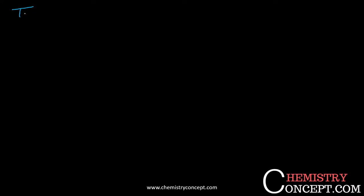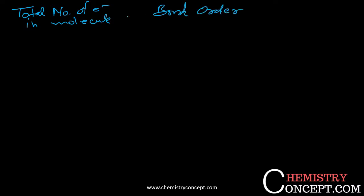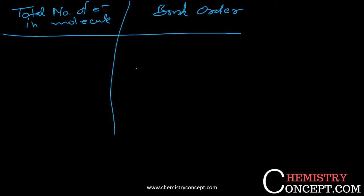That is the traditional way to find out the bond order and magnetic property. But here I will tell you a trick by which within a second you can tell the bond order and the magnetic property. For that, I will make a table with the total number of electrons in the molecule on one side and the respective bond order on the other.